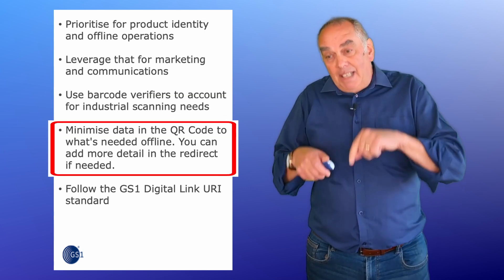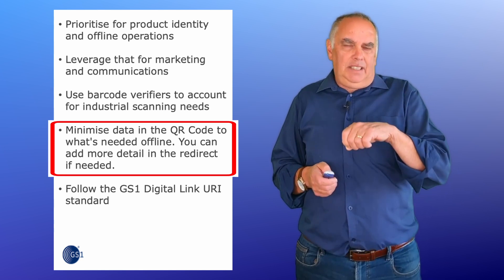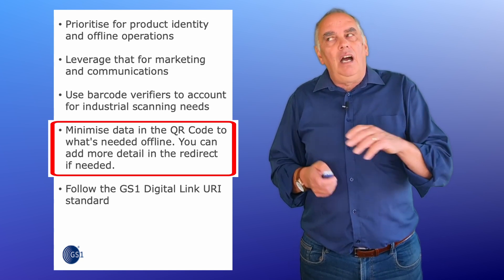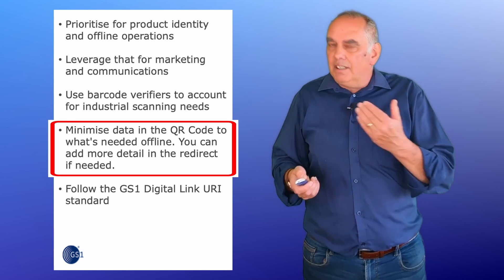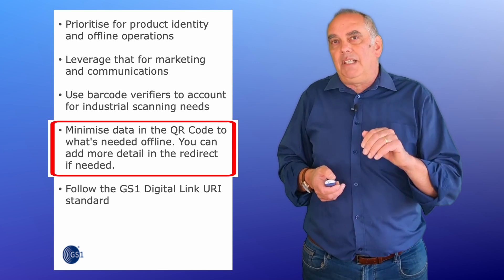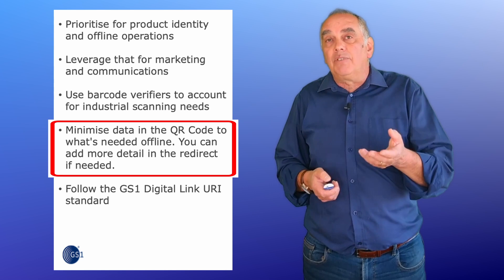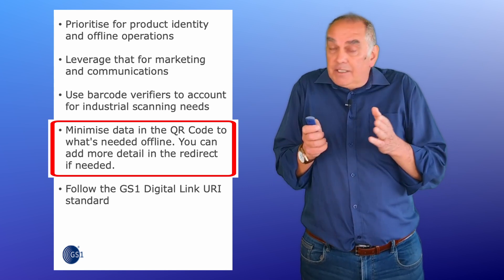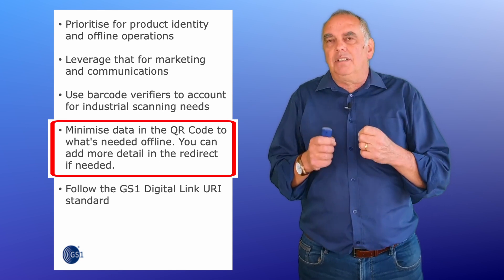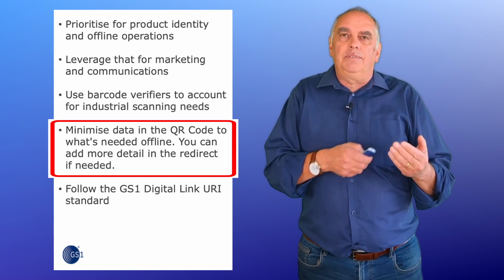Minimize the amount of data embedded in that QR code. Consider what data beyond the GTIN you want to embed in that QR code to enable your business use cases, and what can be managed and enabled through redirection and your content management system. If you need to add extra data for your CMS, use that or add it as part of the redirection service. For one thing, it'll help keep the size of the QR code down, but it also enables that critical separation of product identity from the identity or location of information about it.